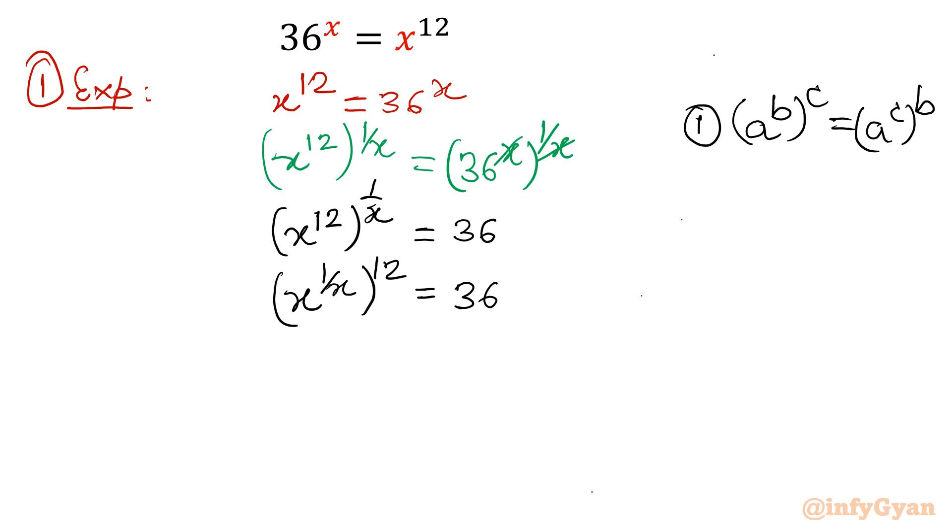So I will write x power 1 over x whole power 12 equal to 36. Now 36 can be written as 6 square. Now what I will do, I will take both sides 1 twelfth power. So it will be 1 over 12, it will be 1 over 12.